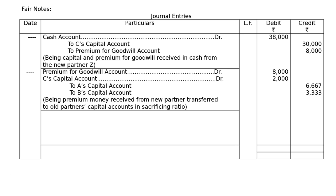Second entry: Premium for goodwill account debited 8,000 (amount received in cash from C) and C's capital account debited 2,000 — because C could not pay the full 2,000 balance; he paid only 8,000 out of the required 10,000 — to A's capital account and B's capital account in the sacrificing ratio of 2:1. Being premium money received from new partner transferred to old partners' capital accounts in sacrificing ratio.